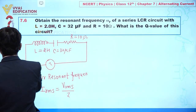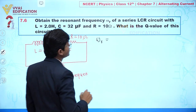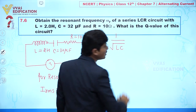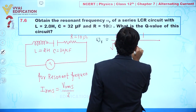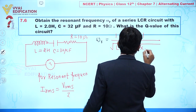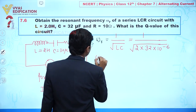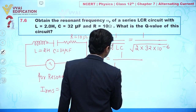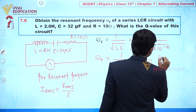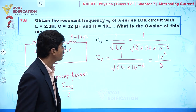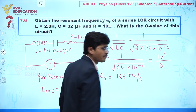Now let's put in all values. The resonant frequency omega r equals 1 over the square root of LC. L is 2, and C is 32 microfarad, so we get 1 over the square root of 2 multiplied by 32 × 10⁻⁶. This gives 1 over the square root of 64 × 10⁻⁶, which equals 10³ divided by 8, giving us omega r equal to 125 radian per second.